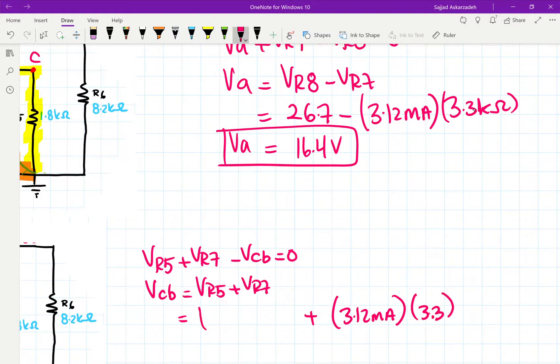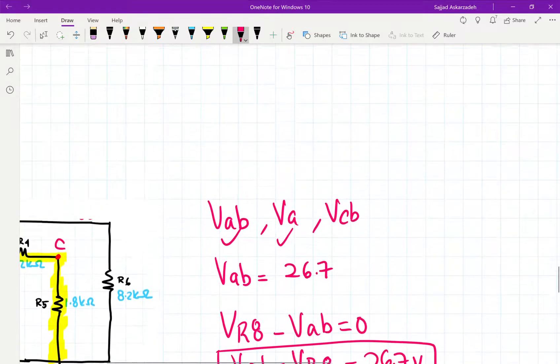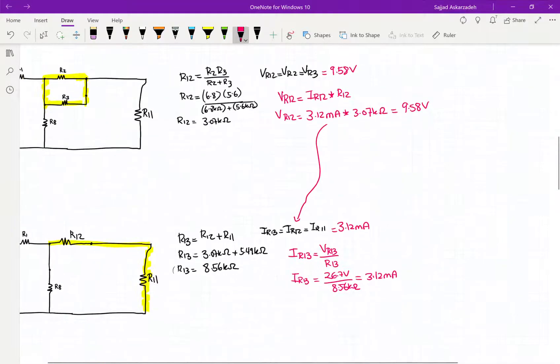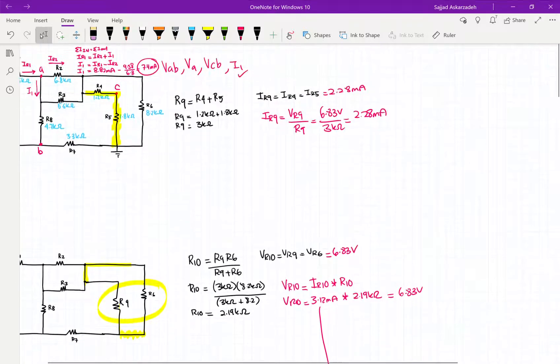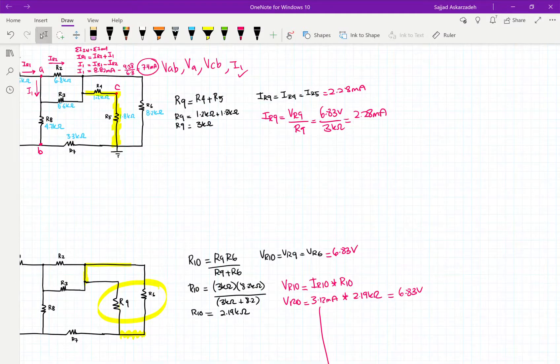And then VR5, we just have to go up and see what VR5 is. So VR5, based on the results that we found, VR5 is 2.28 milliamps. And then the value for R5 is 1.8.